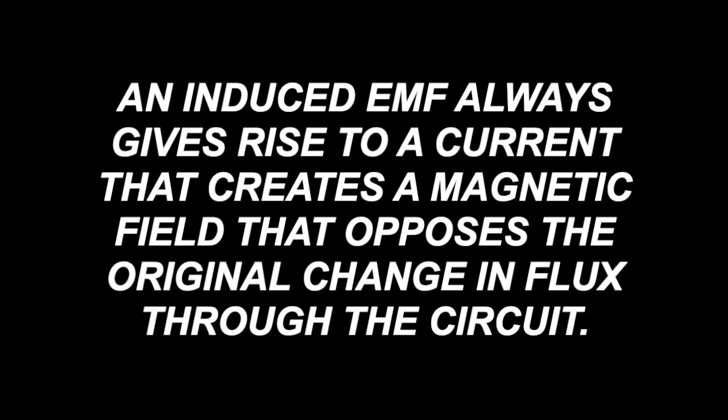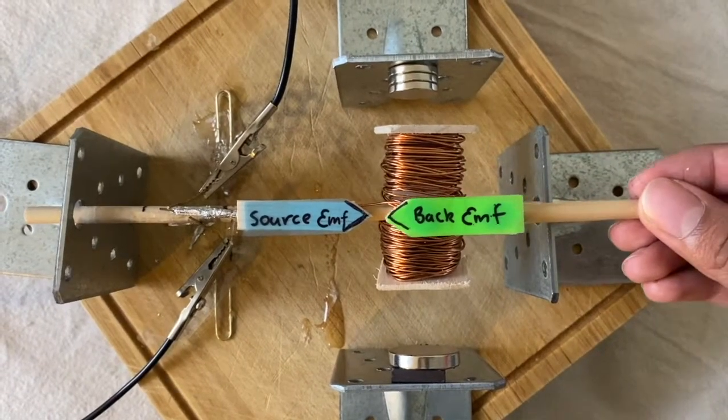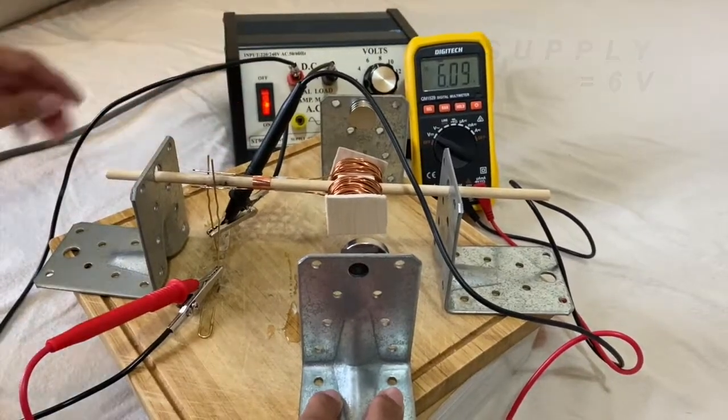Well, as a result of this, Lenz's law came about, which states that an induced EMF always gives rise to a current that creates a magnetic field that opposes the original change in flux through the circuit. Essentially, it dictates that the EMF generated in the motor will oppose the direction of the source EMF, causing the net EMF of the whole coil to decrease.